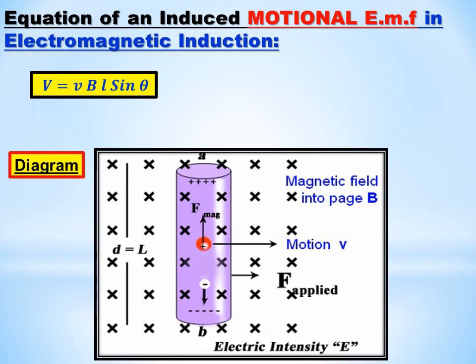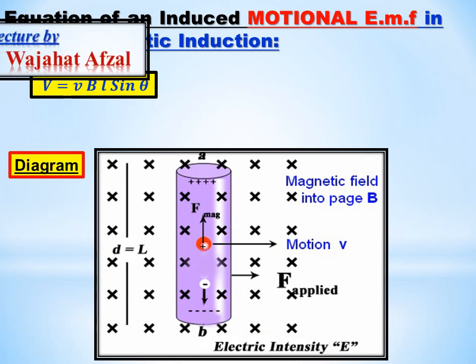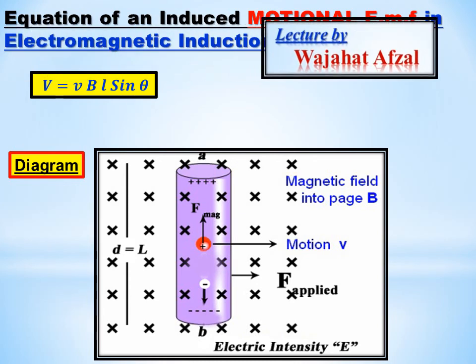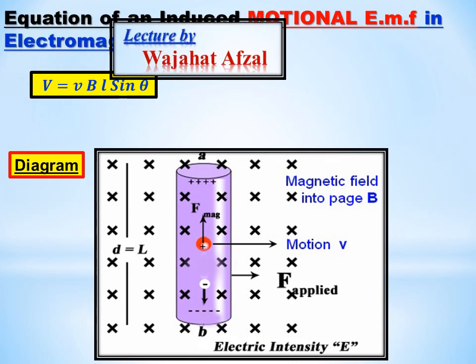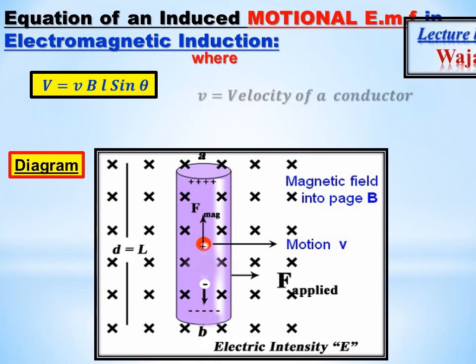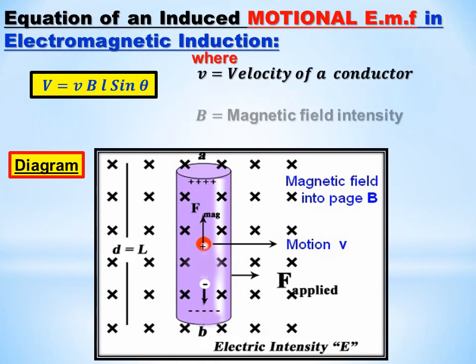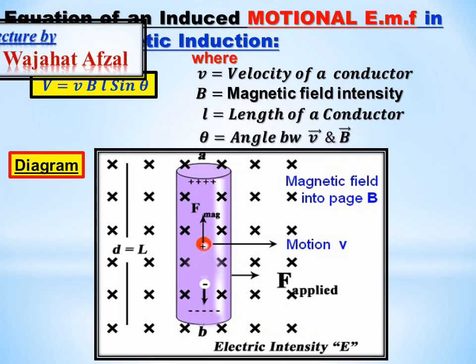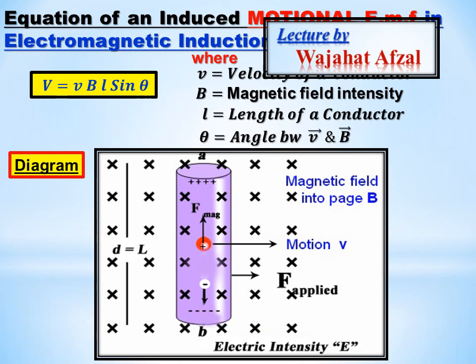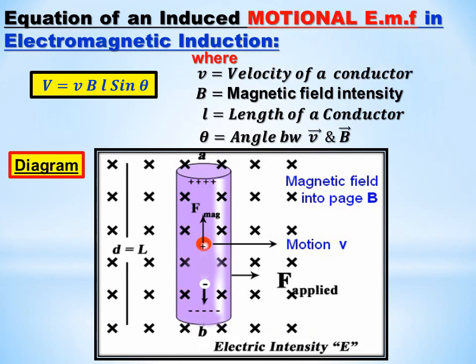The equation for motional EMF or potential difference is: V equals V·B·L·sinθ, where V is the velocity of the conductor, B is the magnetic field intensity, L is the length of the conductor, and θ is the angle between the velocity and the magnetic field.